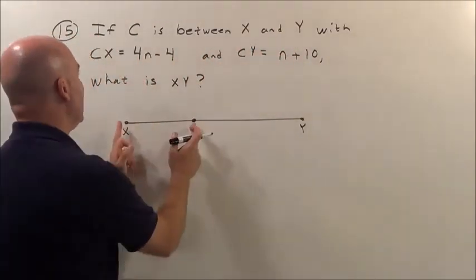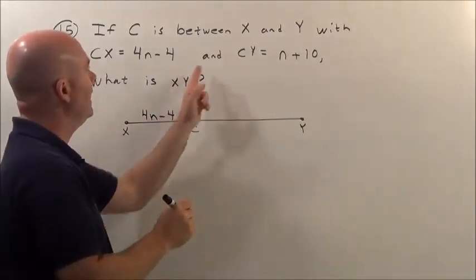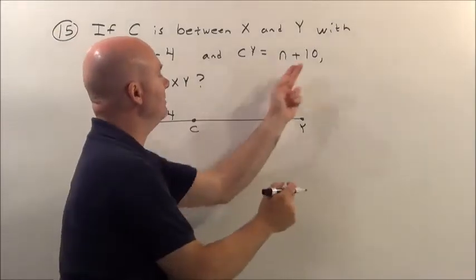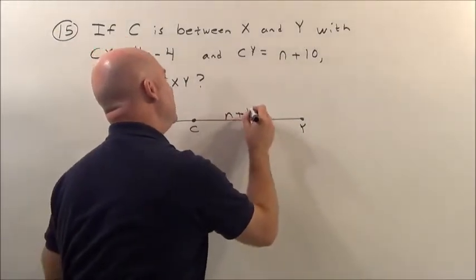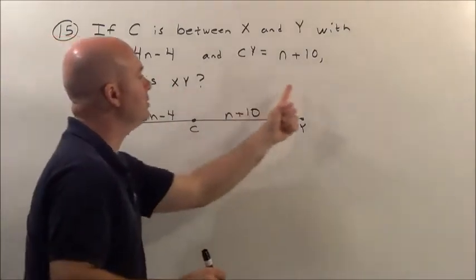With CX, C to X, that distance is represented by 4n minus 4. And CY, that distance is represented by n plus 10. It says, what then is X to Y's distance?